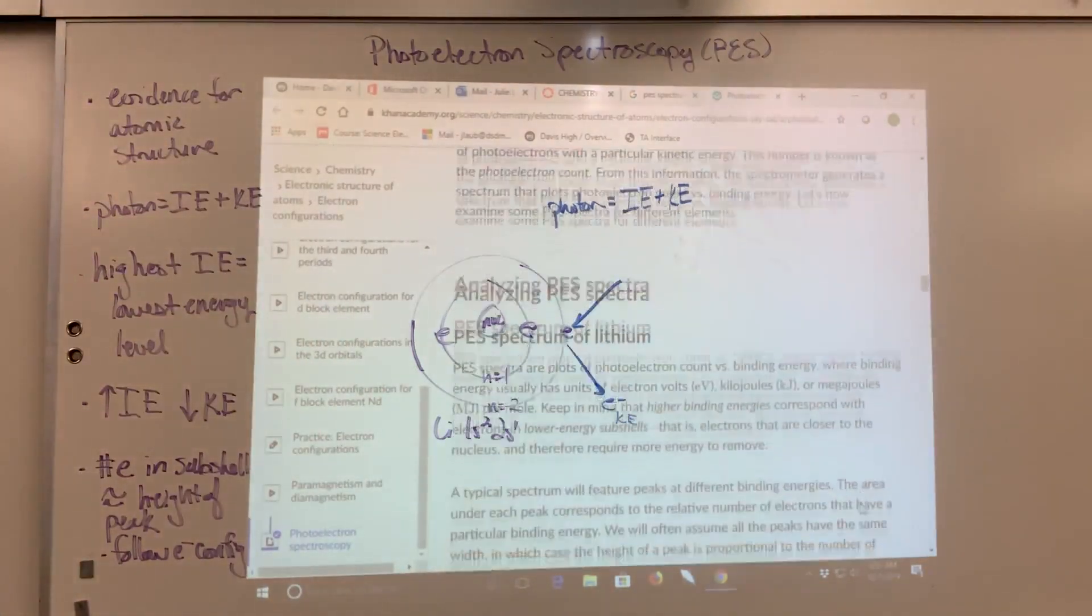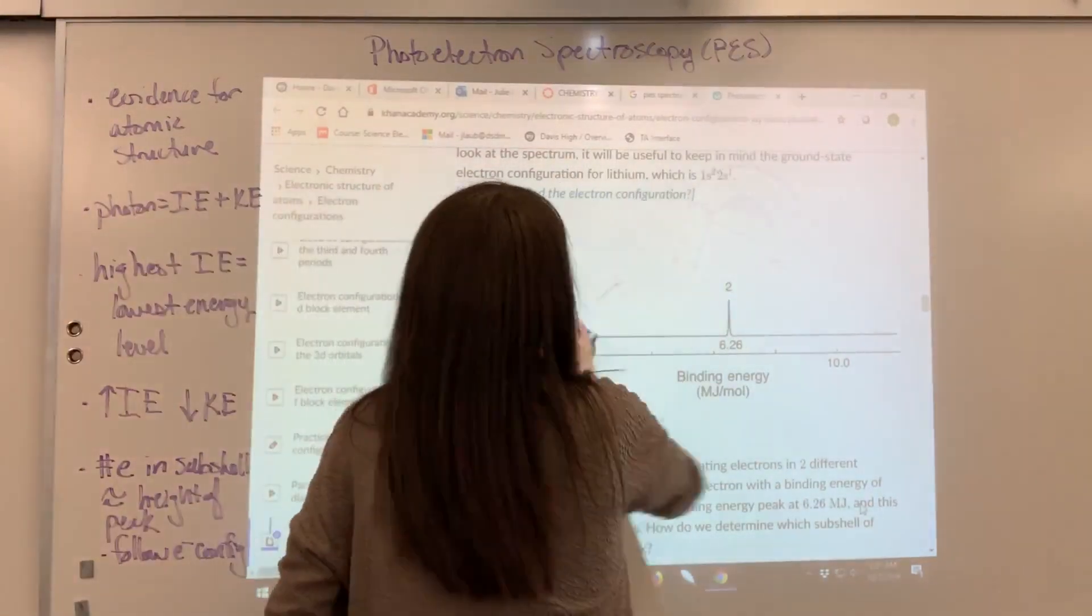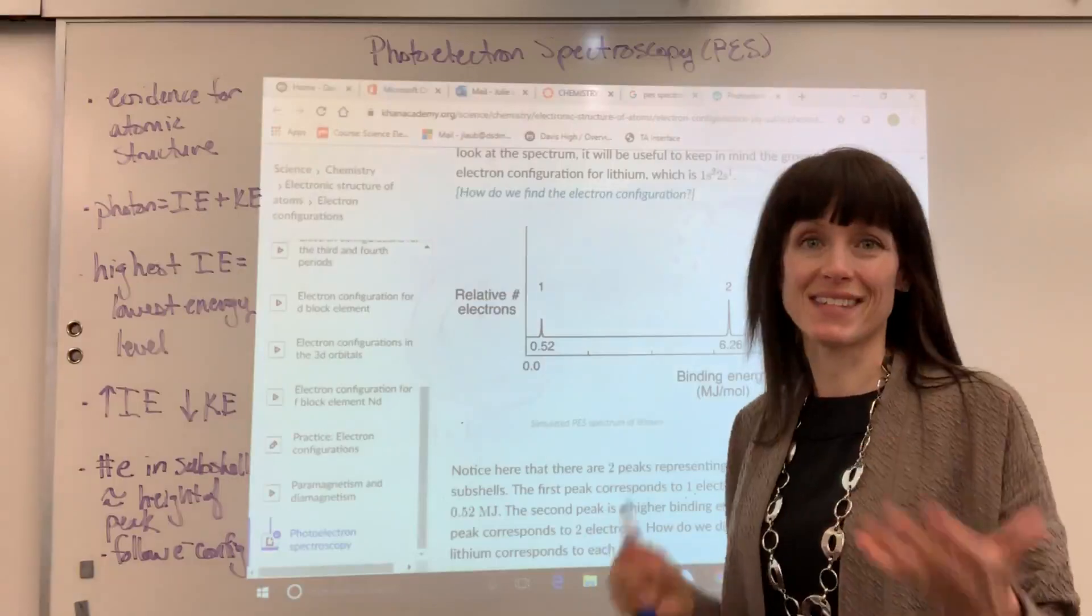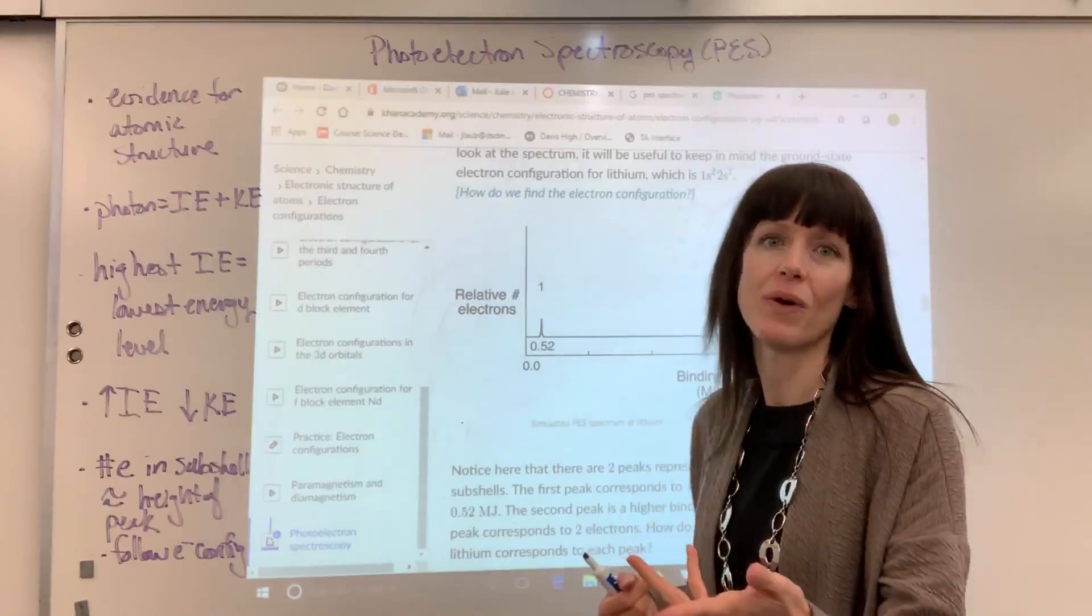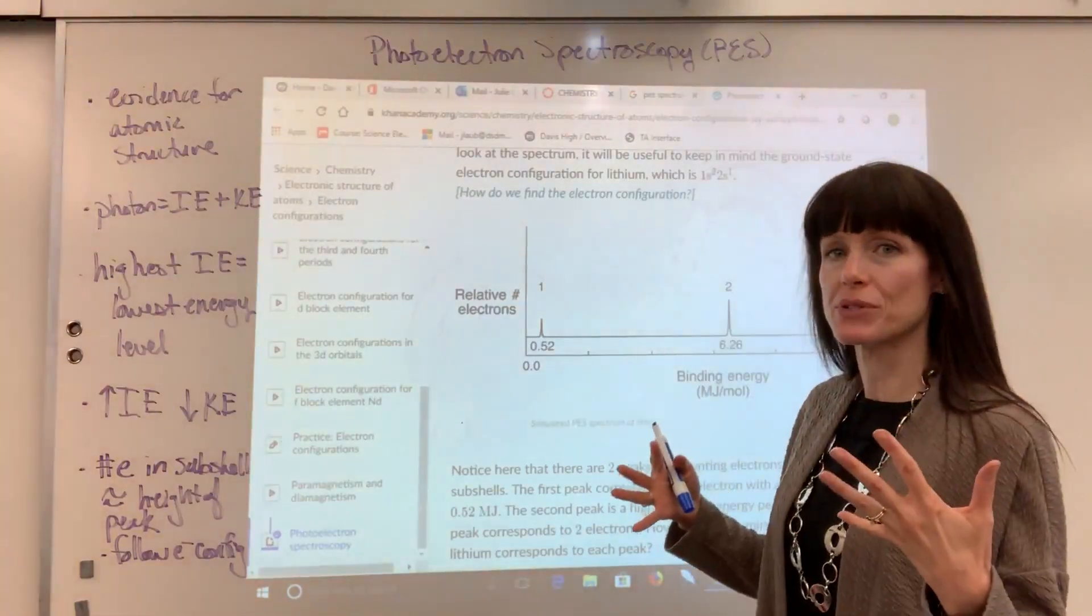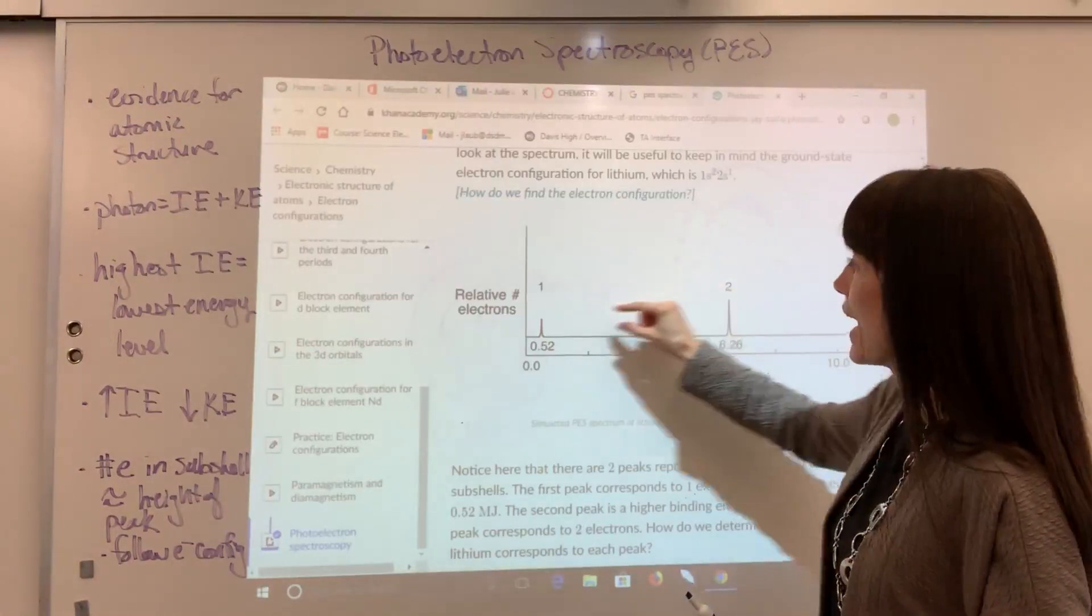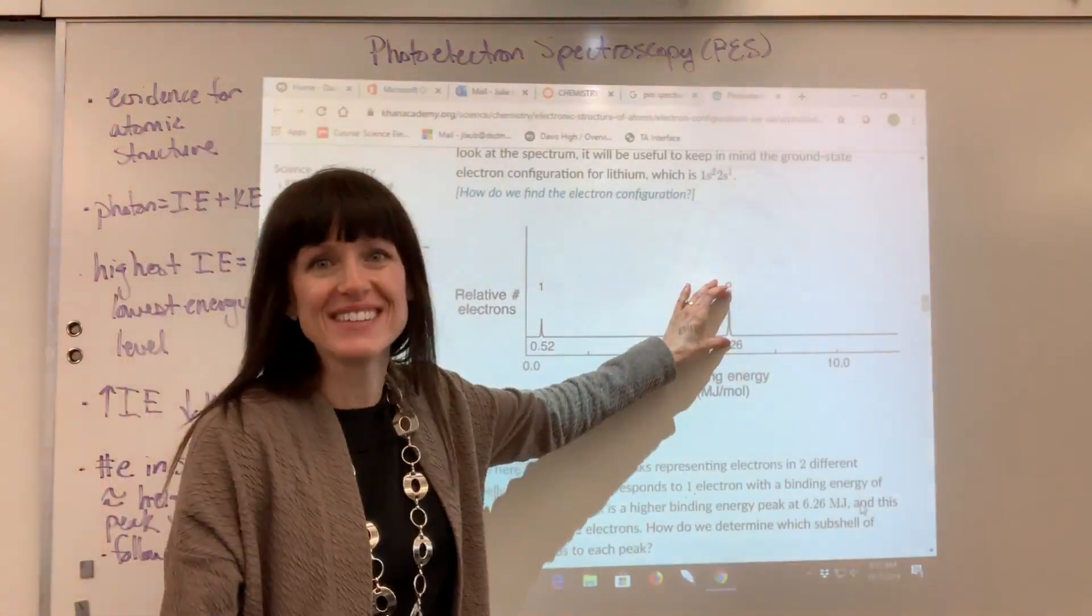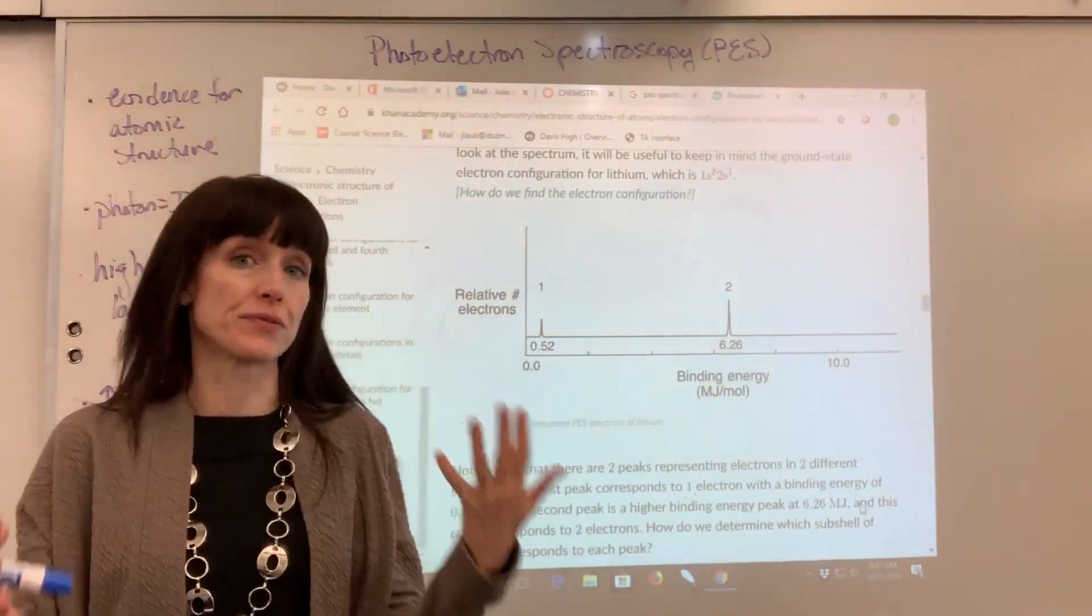So let me show you an example of a PES spectrum. So here we have it, our PES spectrum, and this is going to be for lithium. Now notice the size. So y-axis relative number of electrons. There were three electrons, two in the 1s shell, and then one in the 2s shell. They had equal opportunity to be ejected, those electrons to be removed. Notice that this peak is twice the height of that peak. So just looking right there, you go, oh, there were two electrons in the first energy level, and one electron in the second energy level. So there's the first piece of information.